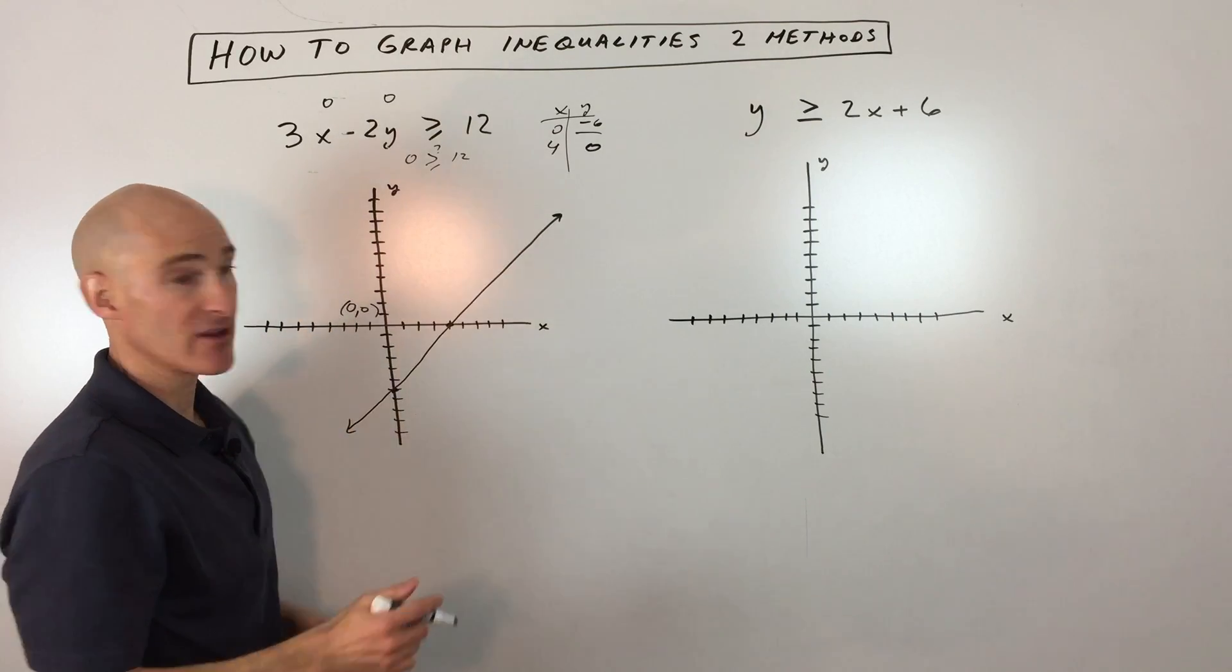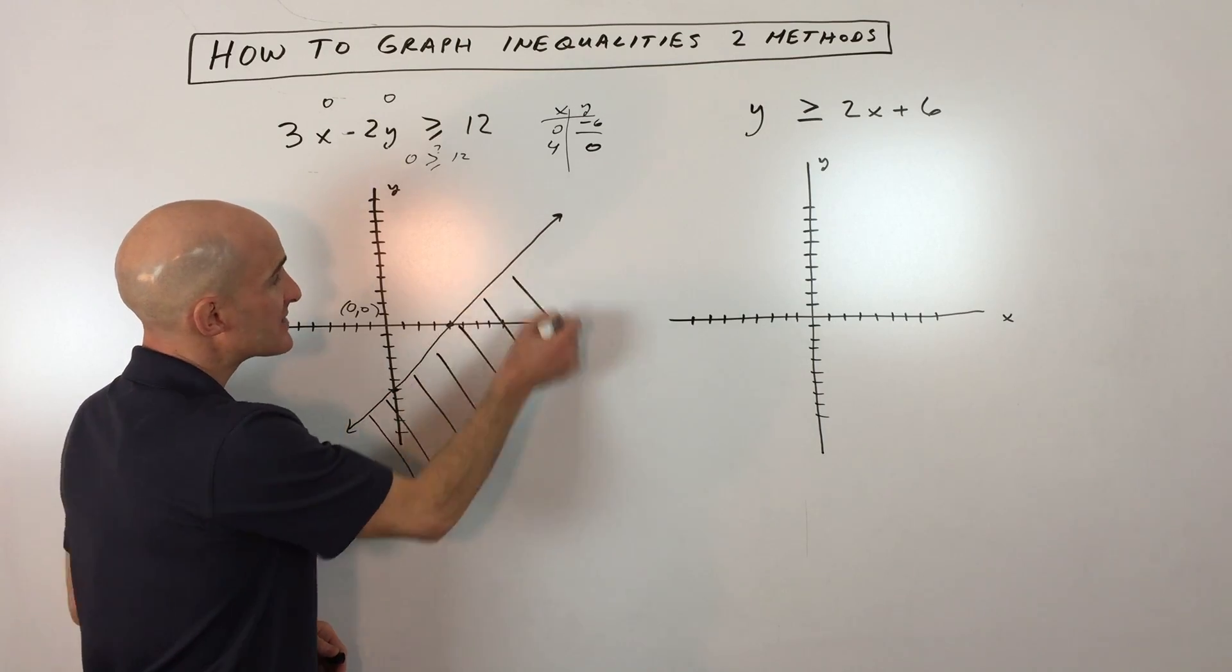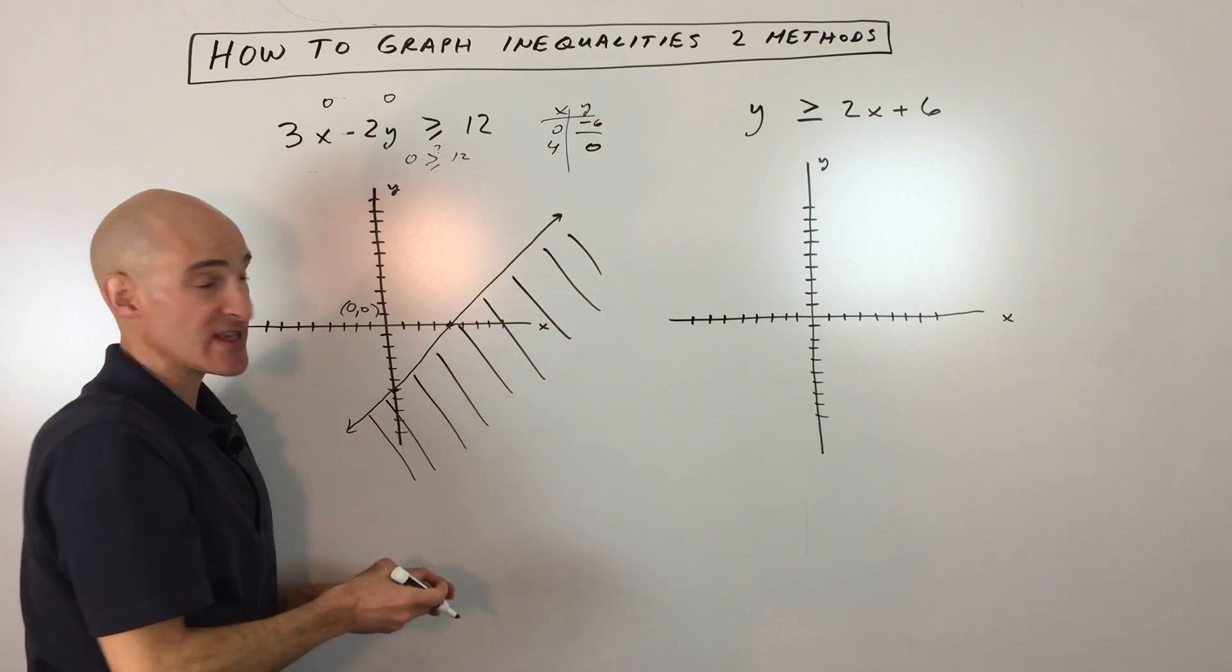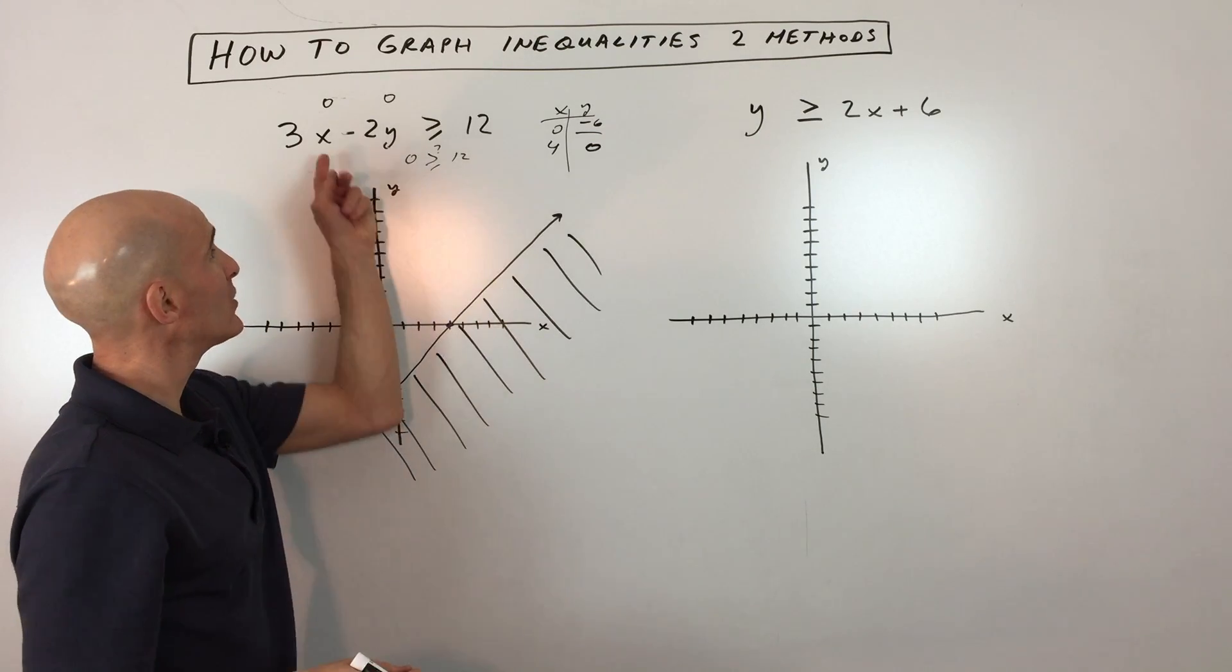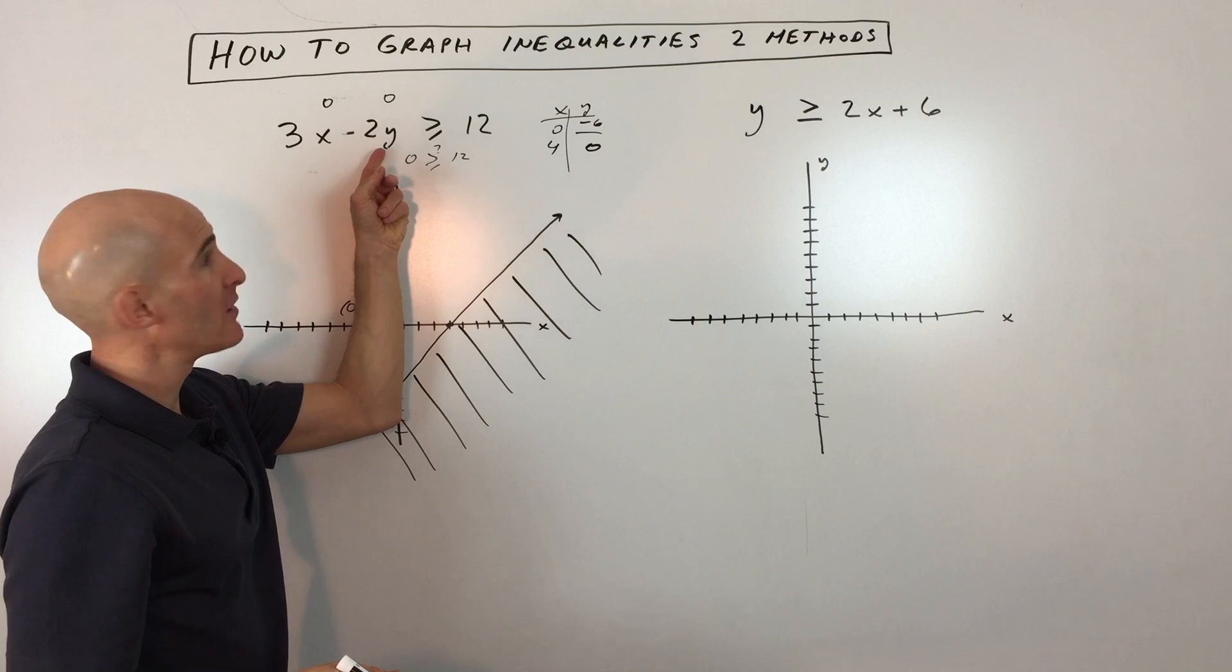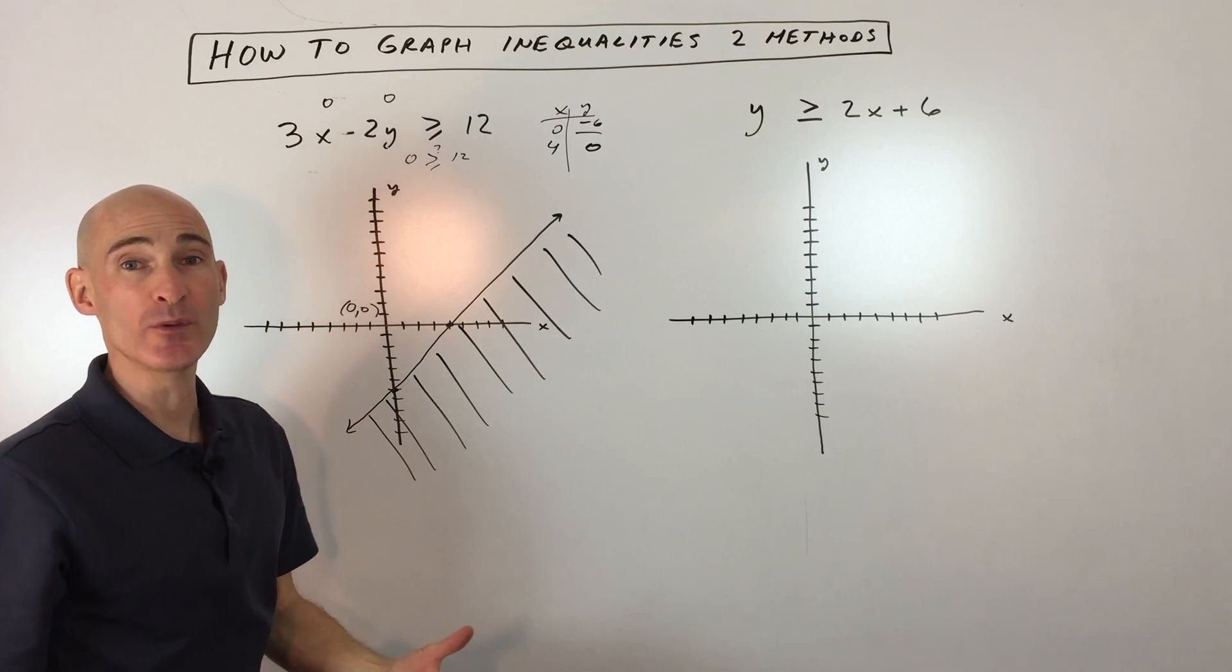We want to shade on the other side of the line. So that's what I'm going to do right now. I'm just going to shade, and what this represents is a set of solutions. Any point here, if you pick any coordinate, like say 10, negative 1, if you put 10 in for x and negative 1 in for y, this is going to be greater than or equal to 12. It's going to make the inequality true.